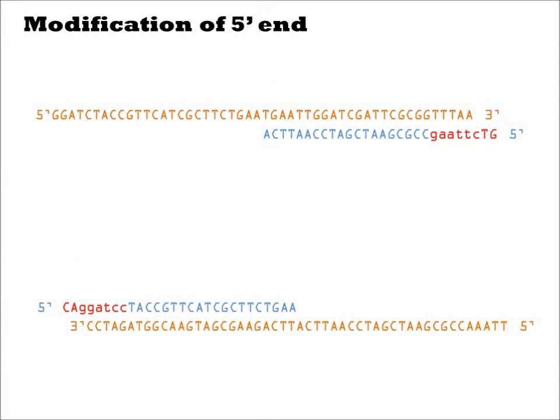You can also use PCR to add sequence to the 5' end of a DNA fragment. Using the same template as before, we will now add restriction sites to the 5' ends of the oligos.